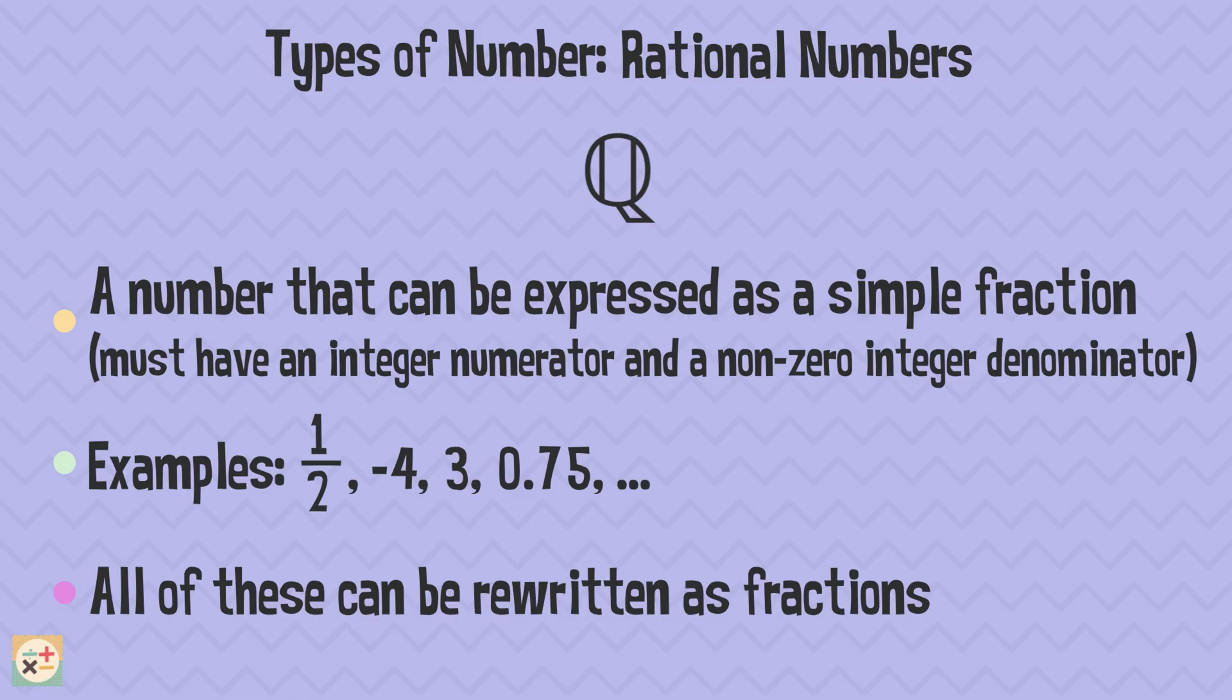Rational numbers can also be represented as decimals, but these decimals must either terminate or repeat in a pattern. So, if a number can be written as a fraction, it's a rational number.